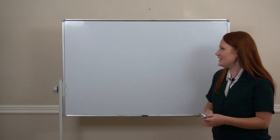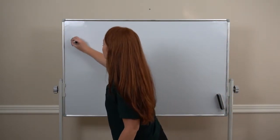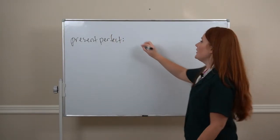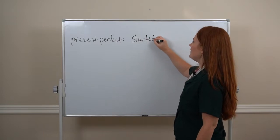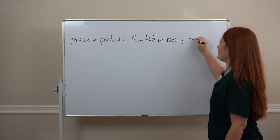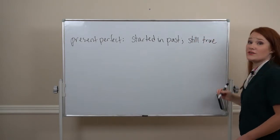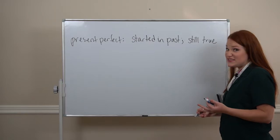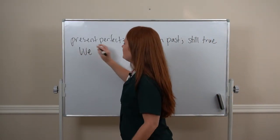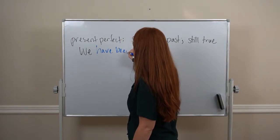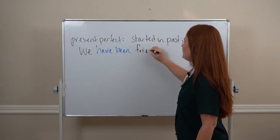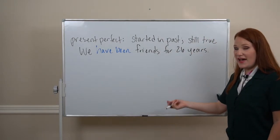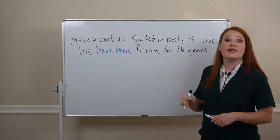First, let's start with a review. First up: present perfect tense. We use present perfect for something that started in the past and it's still true. For example, I met my best friend 26 years ago. I'm still friends with her. We have been friends for 26 years. It started in the past and it's still true. We use present perfect for this situation.